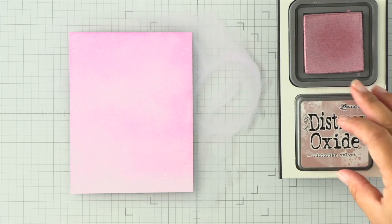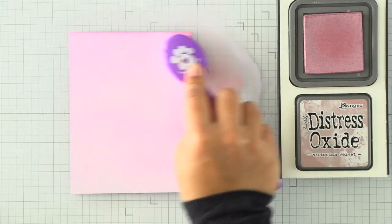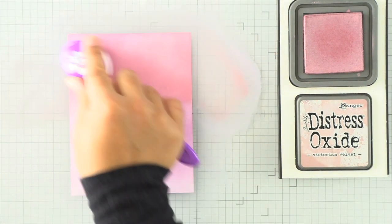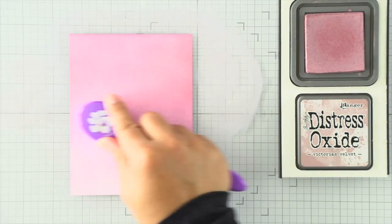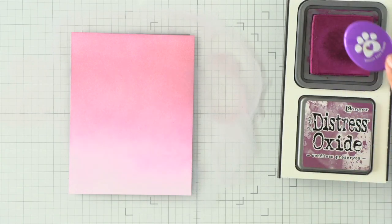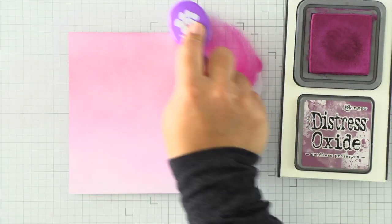I'm using distress oxides. I'm first filling my entire panel with milled lavender, a light purple. Then I'm going to use Victorian velvet to go all the way down, covering about three quarters, maybe halfway or a little bit more, because I know that my tree border is going to cover the bottom.